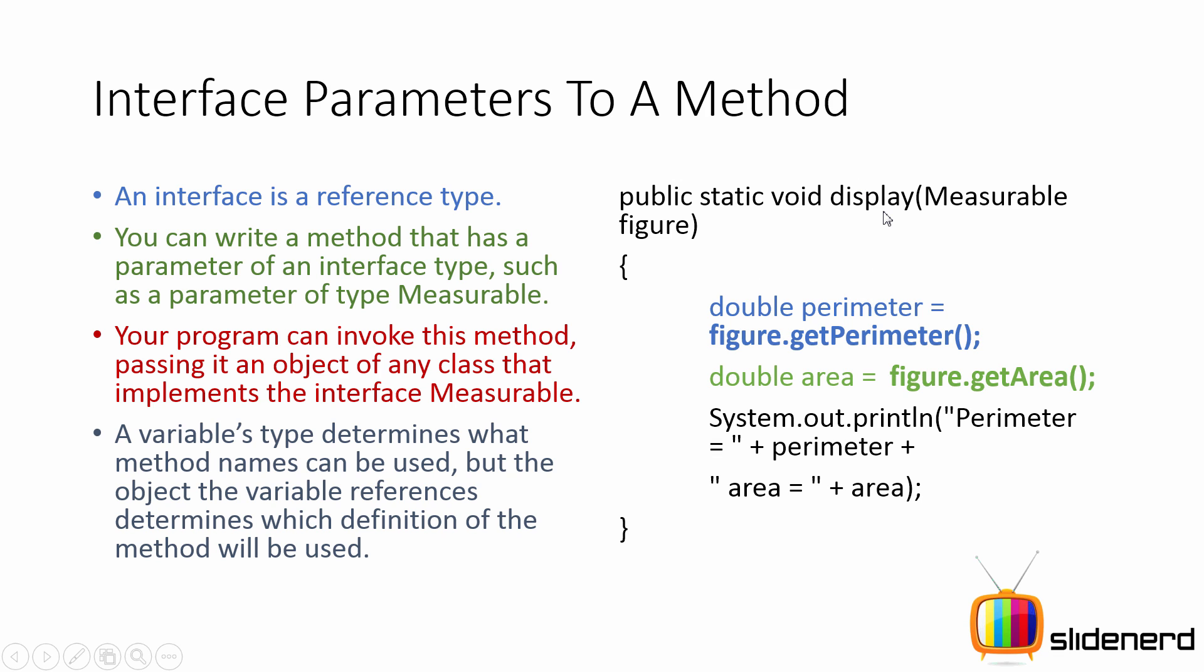Well, that's the trick when it comes to polymorphism. You're going to call this method display by passing an object that implements the measurable interface. In other words, if there is a class called rectangle that implements the measurable interface, you will create an object of rectangle and you will call display and pass rectangle inside that.